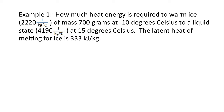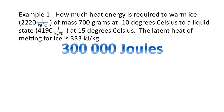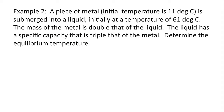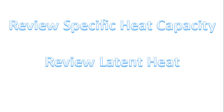That's the first example — we'll discuss how we get the final answer to one significant digit a little later. The second example: a piece of metal at an initial temperature of 11 degrees Celsius is submerged into a liquid initially at 61 degrees Celsius. The mass of the metal is double that of the liquid, and the liquid has a specific heat capacity that is triple that of the metal. Determine the equilibrium temperature. But before we tackle these two problems, we're going to review specific heat capacity and latent heat.